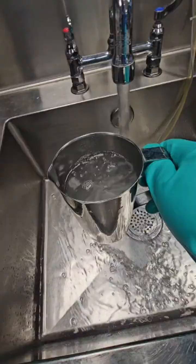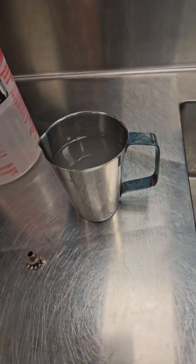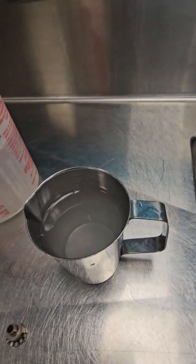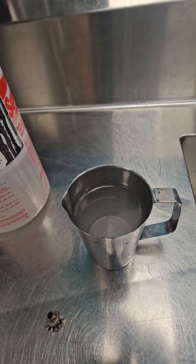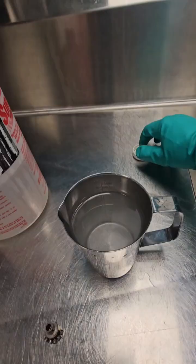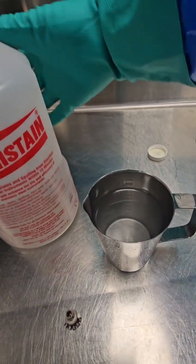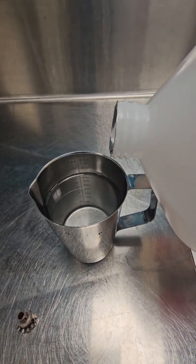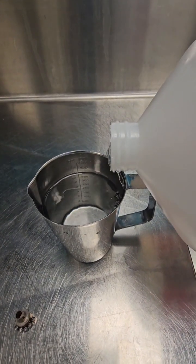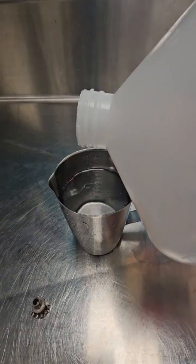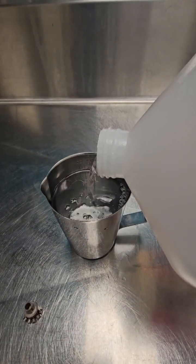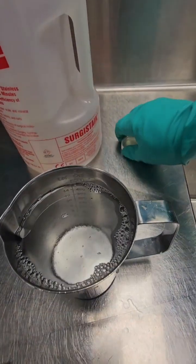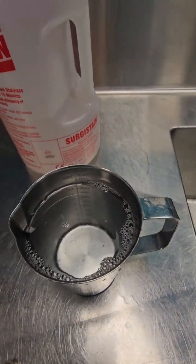So I got a 16 ounce cup here. We're going to fill it up with some hot water. And I'm filling it up to the 14.5 ounce mark to add about 1.4, 1.5 ounces to 1.6 ounces of chemistry. So it's actually 16 ounces. So I should be putting 10%, which is 1.6 ounces of chemistry here. So I'm pouring it right in.